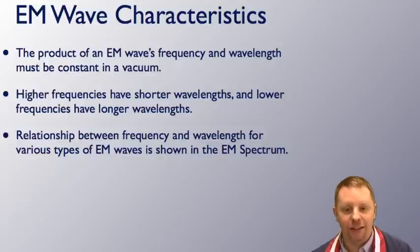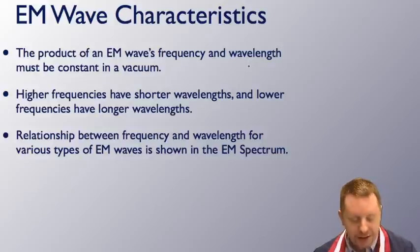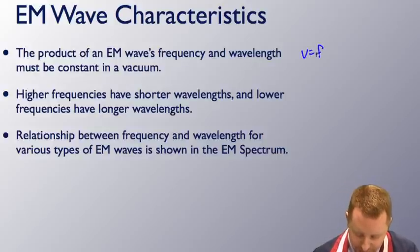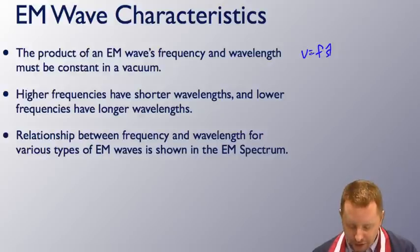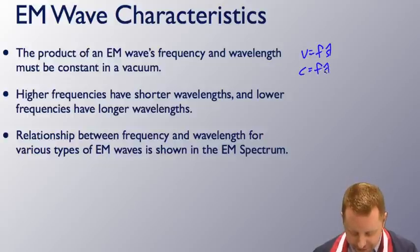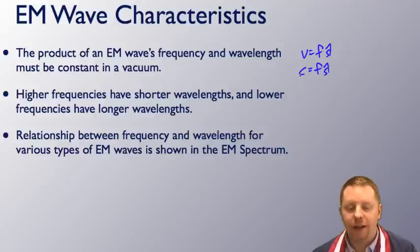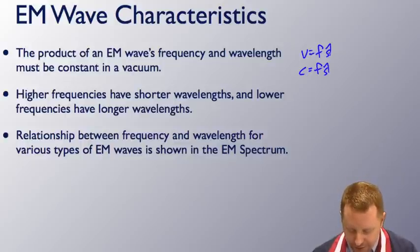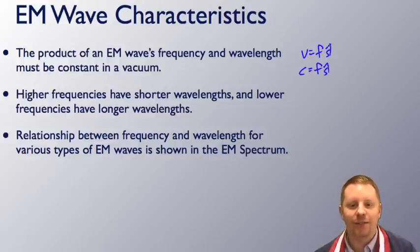Some characteristics of electromagnetic waves. First, the product of a wave's frequency and wavelength must be constant in a vacuum. Remember v equals f lambda? Well, if v, the velocity of the wave in a vacuum, is constant, it's c, then c equals f lambda. f and lambda, their product must be constant, must always be c, three times ten to the eighth meters per second. Secondly, higher frequencies have shorter wavelengths. Frequency goes up, wavelength must go down, and lower frequencies must have longer wavelengths.